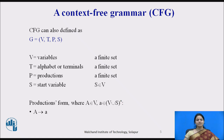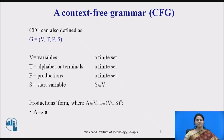In some books, CFG can also be defined as G equals V, T, P, S. Where V is variables — a finite set; T is alphabets or terminals, also a finite set; P is the set of productions; and S is the start symbol. The production form includes terminals, non-terminals, and a non-terminal producing a terminal — that is, A produces small a.